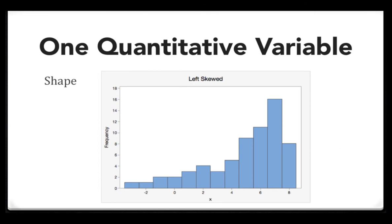In this left skewed distribution, we have more values on the right with the tail pointing towards the left. The direction of the skewness refers to the direction that the tail is pointing.